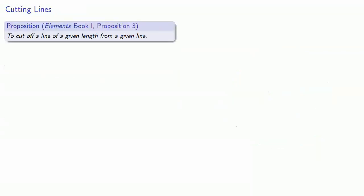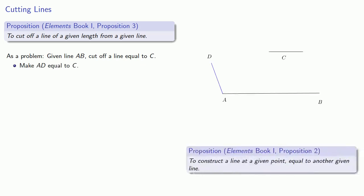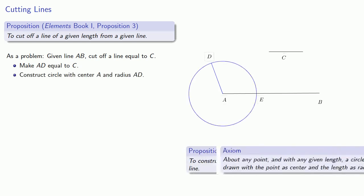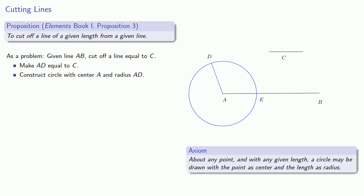The third proposition of the elements is to cut off a line of a given length from a given line. So as a problem, given line AB, cut off a line equal to C. So first, we'll make AD equal to C. We can do that because of Proposition 2. Construct a circle with center A and radius AD. That's axiom 3. And the claim is that EB is the required line.